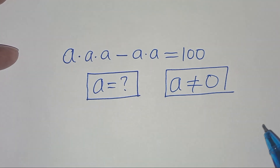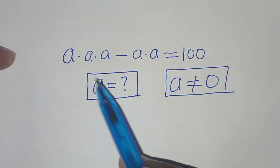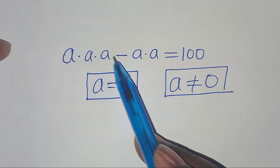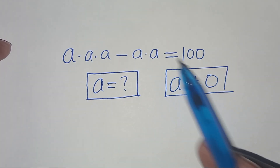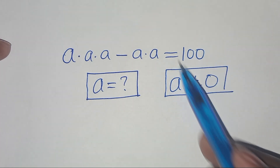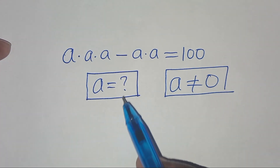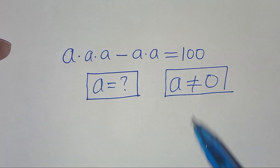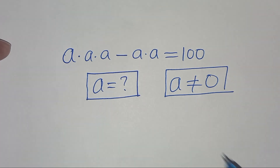Hello everyone, you are welcome to solve this nice algebra problem, which is a times a times a minus a times a, this is equal to 100. What are the values of a, given that a is not equal to 0?